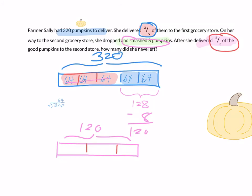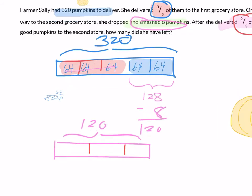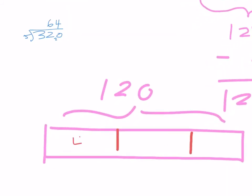So I can find one of those blocks is 120 divided by three. If you know 12 divided by three is four, then that's going to help you. So each block is 40.